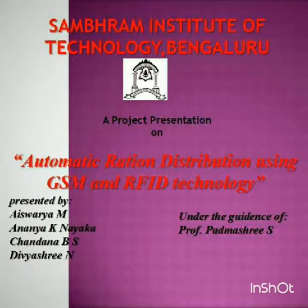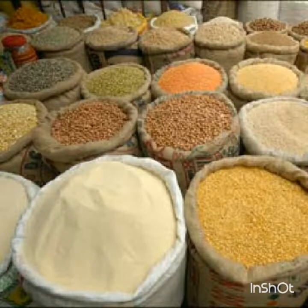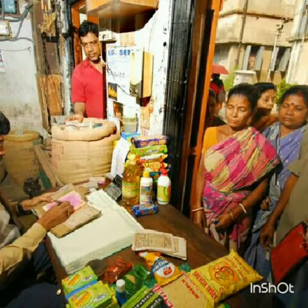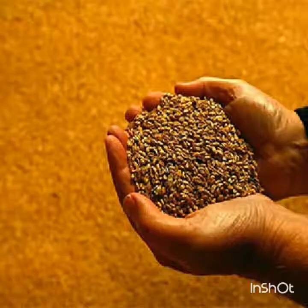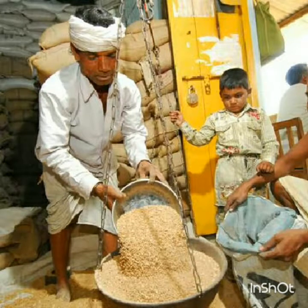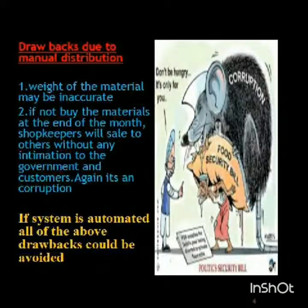Our project is about an automatic ration material distribution system using GSM and RFID technology, done under the guidance of Professor Padma Shriyas. Ration materials are currently distributed manually. The major drawbacks are that the weight of commodities may be inaccurate, and if material is left over at the end of the month, it may be dispensed to others without government notification.